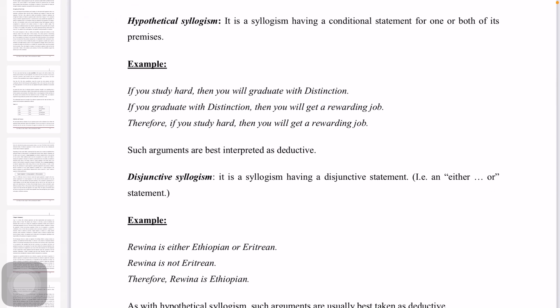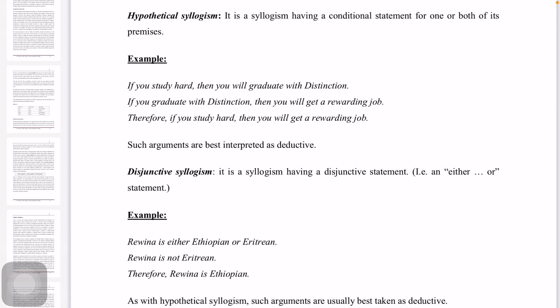A hypothetical syllogism is a syllogism having a conditional statement for one or both of its premises. A conditional statement is an 'if...then' statement. For example: If you study harder, then you will graduate with distinction. If you graduate with distinction, then you will get a rewarding job. Therefore, if you study harder, you will get a rewarding job.